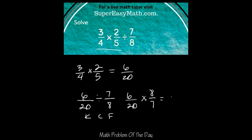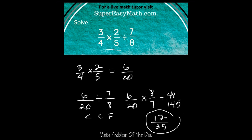When I multiply straight across, I'm left with 48 over 140. Then when I simplify, I can get it down to 12 over 35. So the answer to today's math problem of the day is 12 over 35.